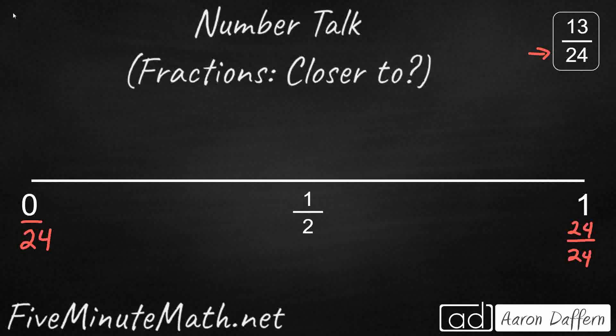So halfway in between those two is going to be 1 half. Now, how can I rewrite 13 24ths and put it close to one of these three? Well, the missing piece here is going to be that 1 half.